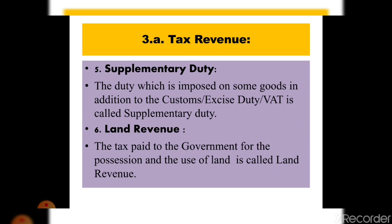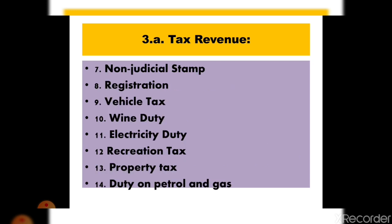The next source of tax revenue is supplementary duty, which is imposed on some goods in addition to customs, excise duty, or VAT — it is one of the main sources of income. Land revenue is imposed on the use of land; taxes paid to the government for possession and use of land are called land revenue. The government also earns a huge amount from stamps used for various documents, applications, judiciary, passport, and exchange bills — called non-judicial stamp.